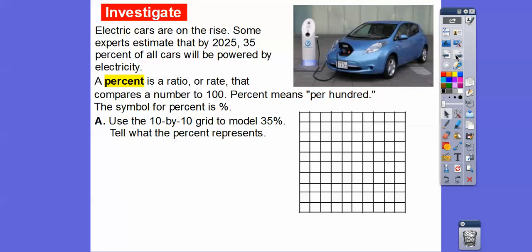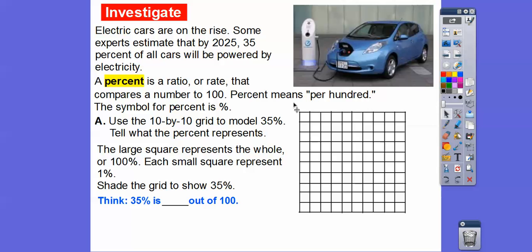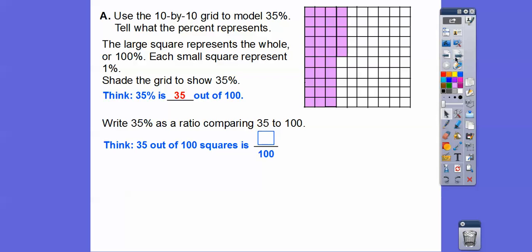Tell what the percent 35% means. The large square represents the whole right here. So this is 100 squares or 100%. Each of these small squares represents 1%. We're going to shade the grid that shows 35%. So 35 is 35 out of 100, per 100%. Percent means per 100. So there's 35 squares that are shaded right there. To write 35% as a ratio comparing 35 to 100, 35 out of 100 is 100 squares, is 35 hundredths right there.